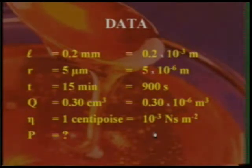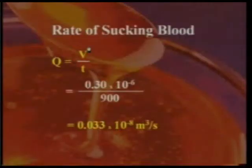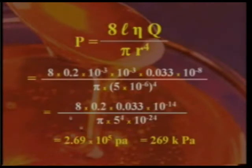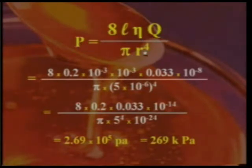What is the pressure required to suck the blood? Calculate the volume of blood flowing per unit time: that is 0.3 × 10⁻⁶ divided by 900, which equals 0.033 × 10⁻⁸ meter cube per second. Using Poiseuille's equation, the formula for pressure is P = 8Lηq / (πr⁴). Substitute all the values into this formula.